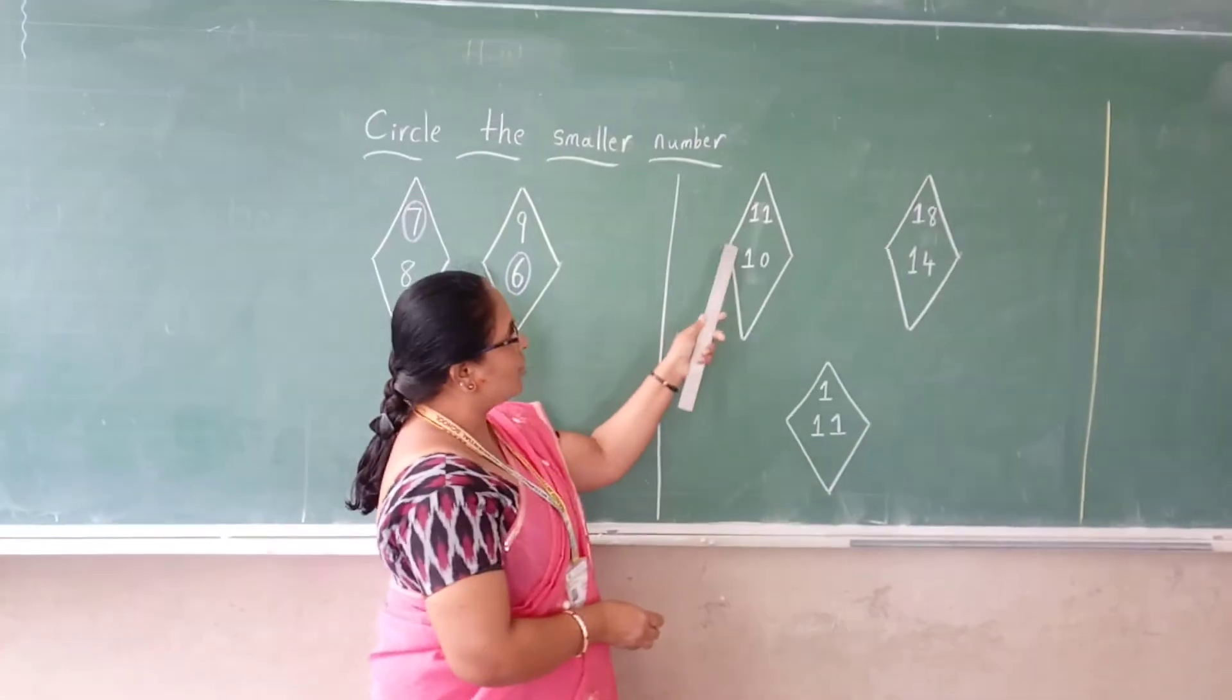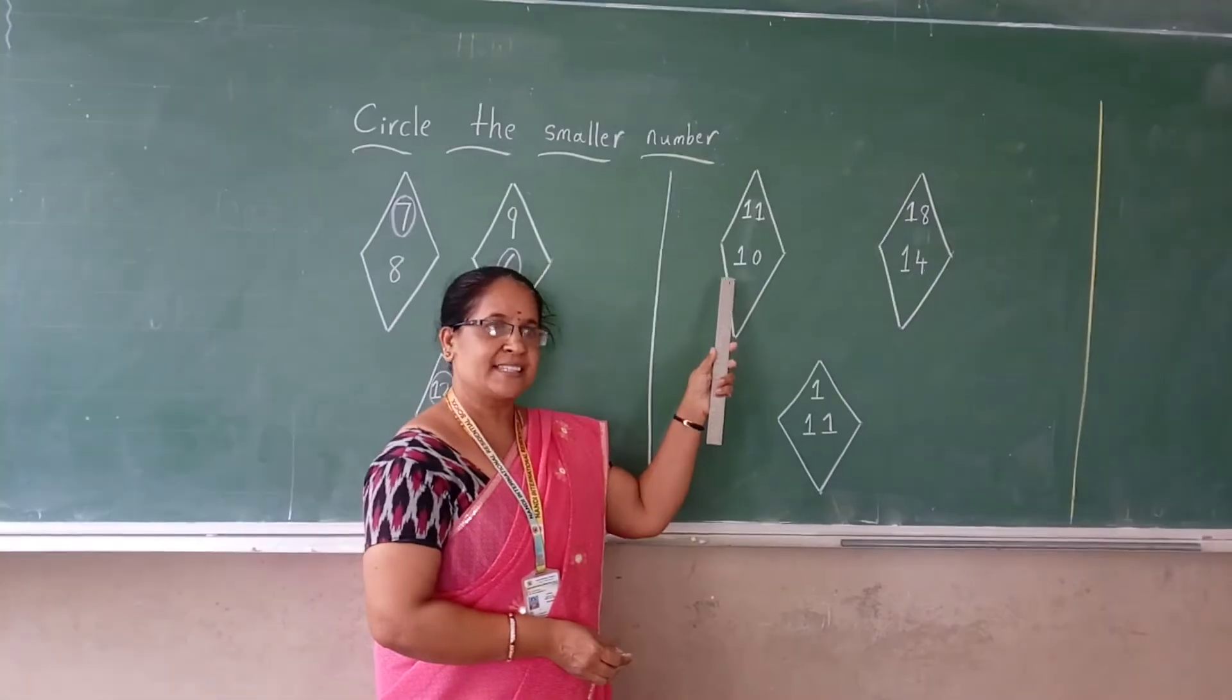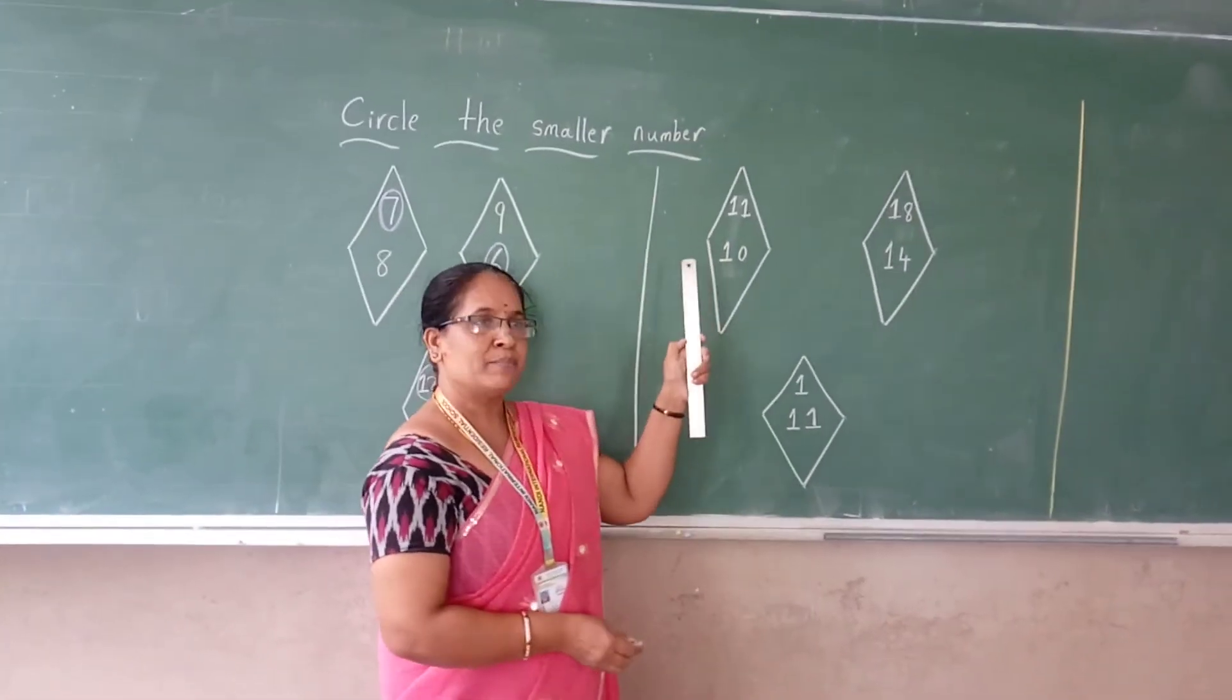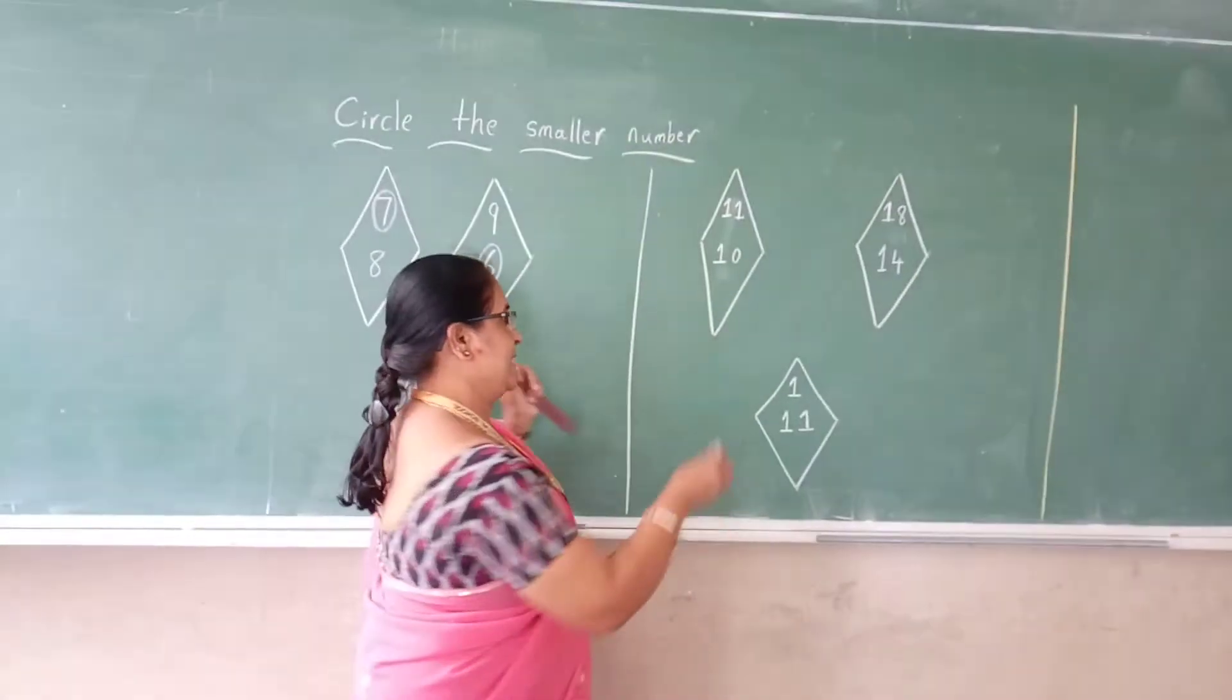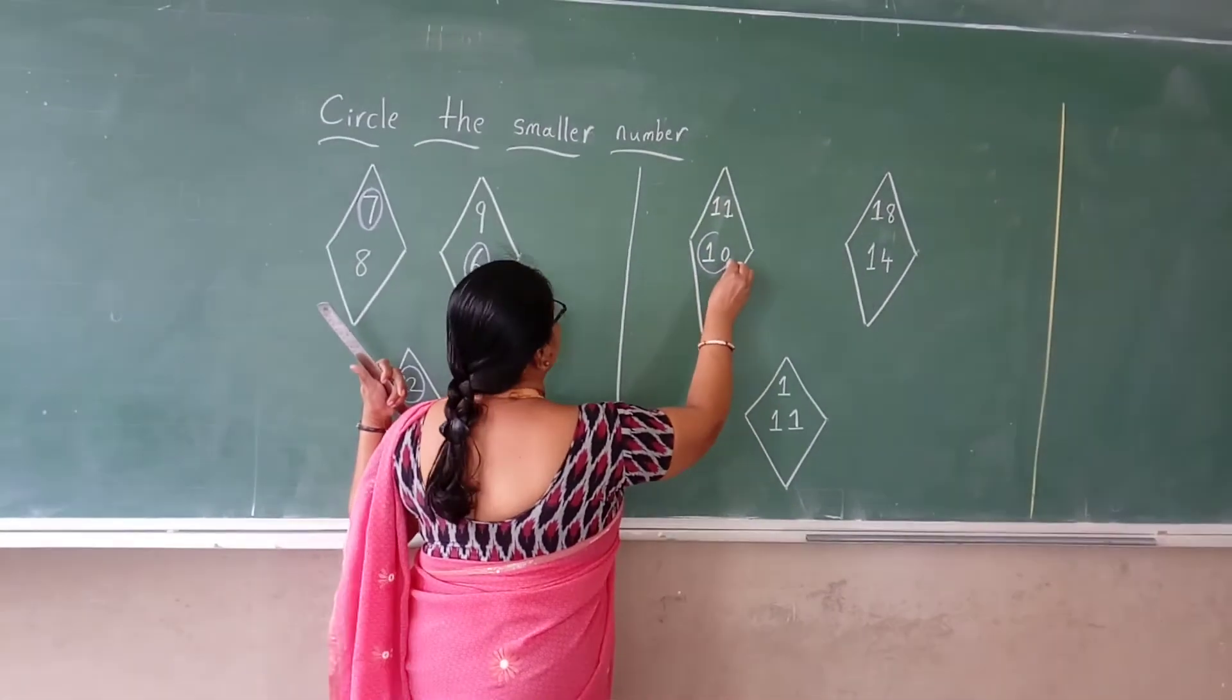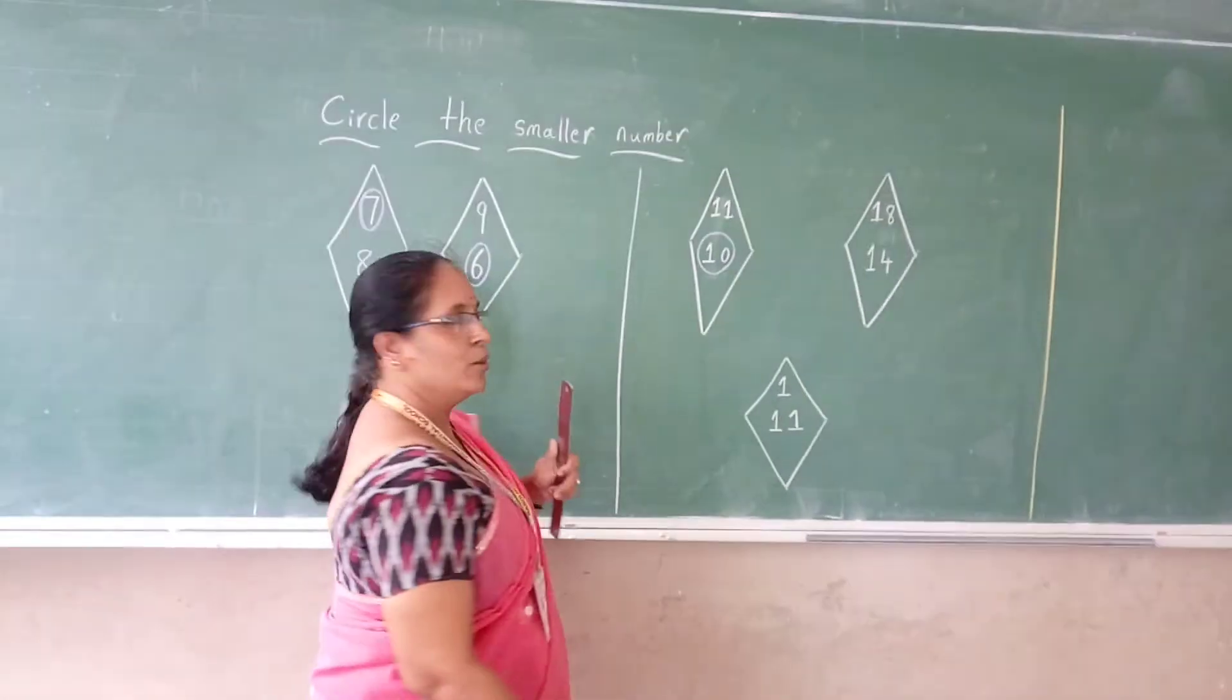Then in next box, 11 and 10 is given. Which one is the smaller number? Tell me. 10. Which one is the smaller number? Circling number 10.